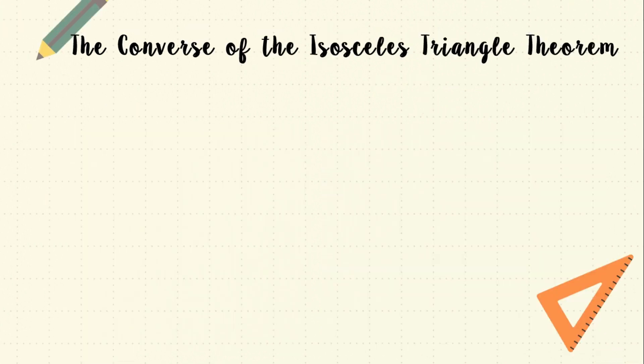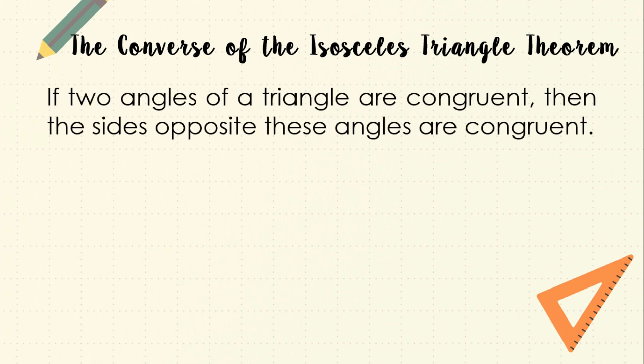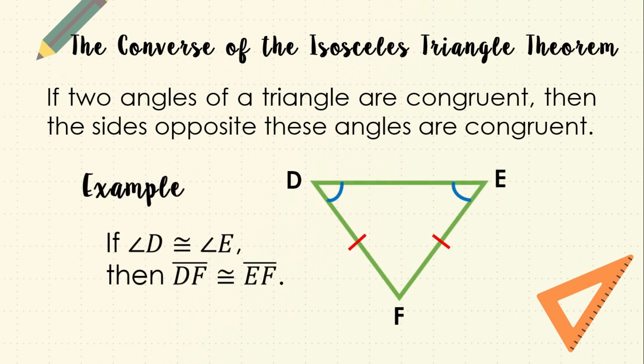Let us now have the converse of the isosceles triangle theorem. This states that if two angles of a triangle are congruent, then the sides opposite these angles are also congruent. For example, in triangle DEF, if angle D is congruent to angle E, then the sides opposite these angles, which are side DF and side EF, are also congruent.